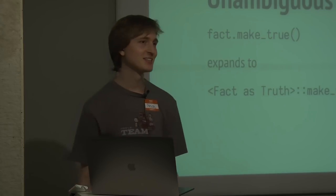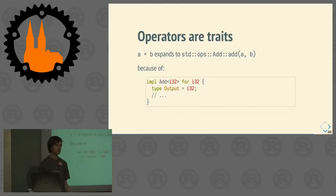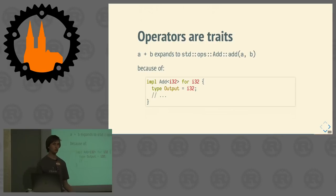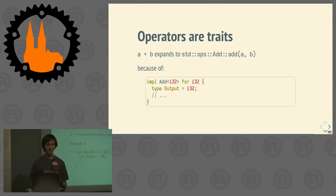One area we haven't covered yet is that traits are also used for operator overloading. If you write `1 + 2`, it expands to an implementation of the `Add` trait in the standard operators module. The Add trait is very simple — it only gives you an `add` method. But this means you can write your own implementation of Add — for example, if you have a HashSet and adding two sets together makes sense to you. You could even write a Div implementation for paths so that `a / b` concatenates them. Please don't do this — but you can.